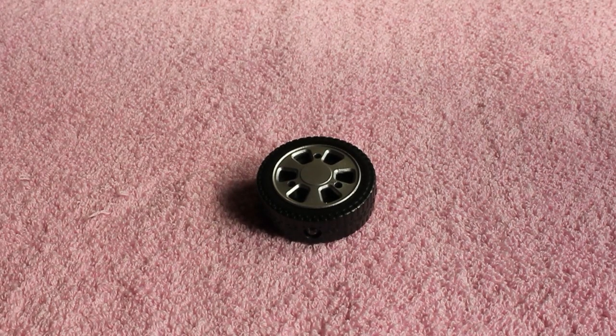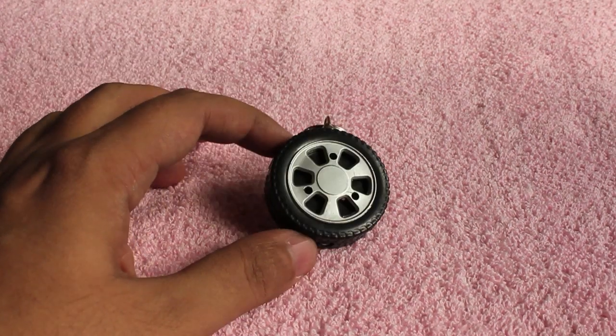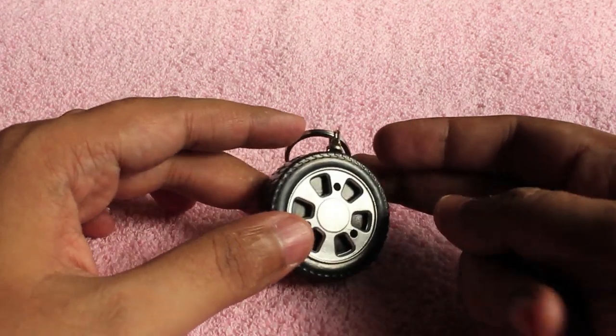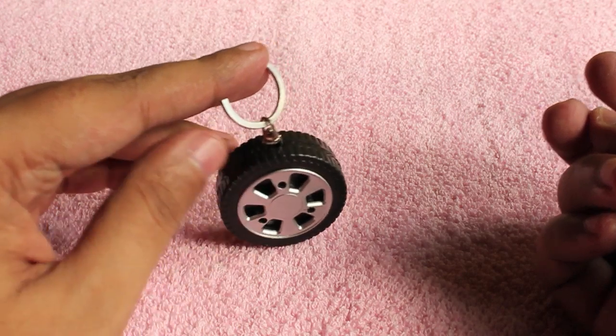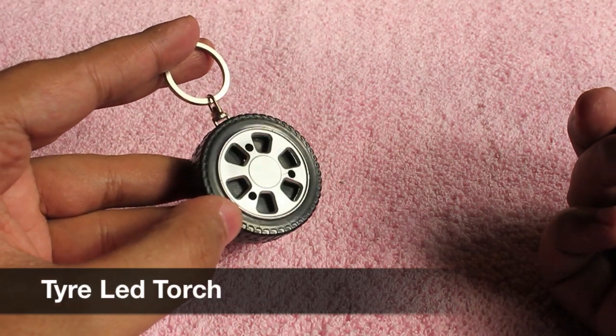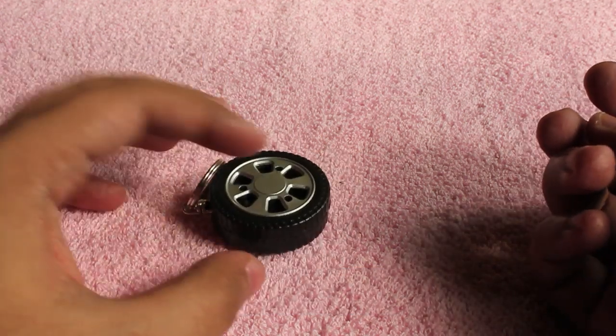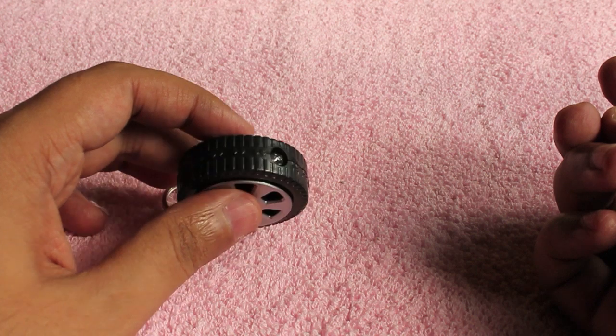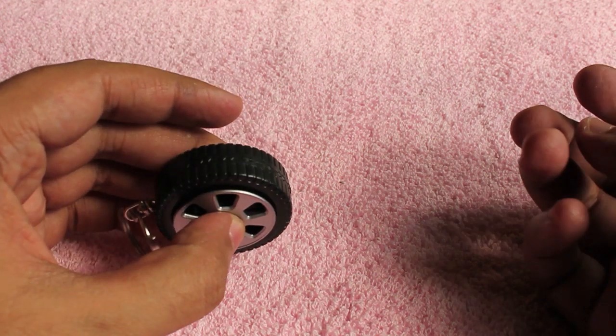Let's take a look at this product. Any ideas? Yep, it's a keychain shaped like a tire. It's a tire LED keychain. By pressing the middle of the wheel, as you can see, that's the LED light.